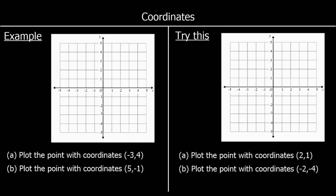Now we are going to plot points using coordinates. Part A says plot the point with coordinates (negative 3, 4). The first number is x — it's always x then y. So the x-coordinate is negative 3, that's here, and a y-coordinate of 4. So that makes it here. It's got an x-coordinate of negative 3 and a y-coordinate of 4. There is our point with coordinates (negative 3, 4).